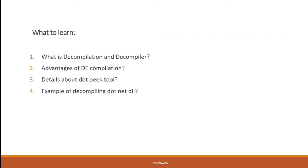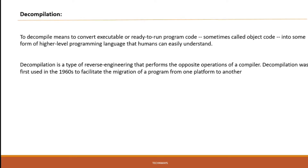So let's go ahead and understand what we can do through this decompiler. We'll cover: what is decompilation, what is a decompiler, the advantages of decompilation, details about the dotPeek tool, and examples of decompiling a .NET DLL. Decompilation means converting an executable — an already-run program — into a form of high-level language that humans can easily understand. So when we create classes and namespaces and deploy them, all those things get converted to a DLL. Decompilation is basically a reverse engineering process.